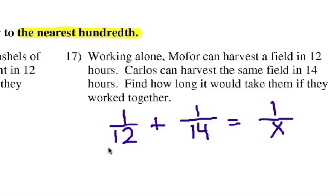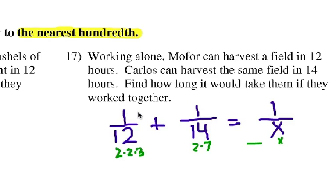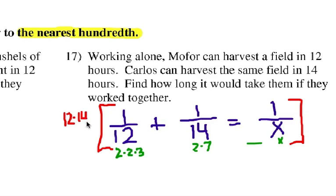To get rid of all these fractions, we need to find a common denominator and multiply all three parts by that common denominator. We look at 12 being 2 times 2 times 3, and 14 being 2 times 7, and x is still going to be x. The shortcut is to use the common denominator of 12 times 14 times x. There is a common factor of 2, but this is the quickest way to get to the next stage, even though the numbers will be bigger and we might have to simplify a little bit.